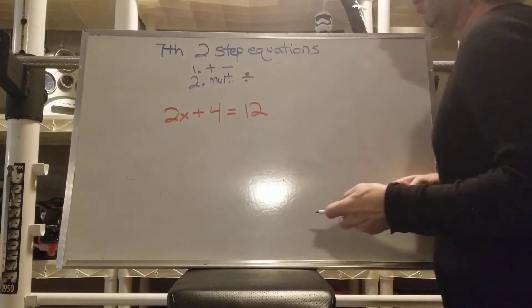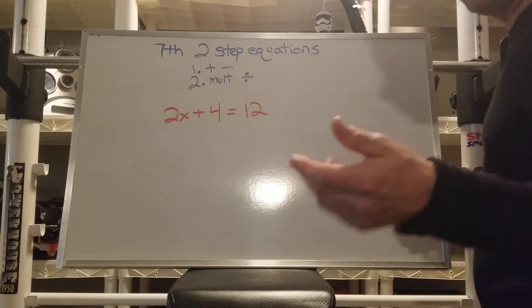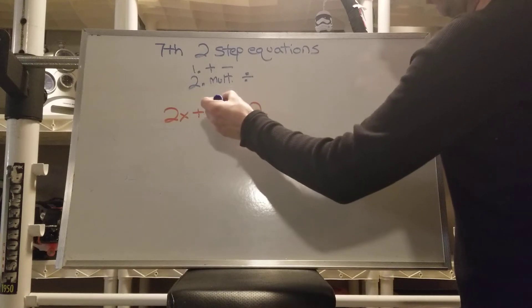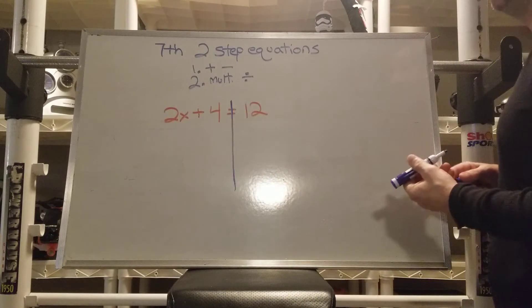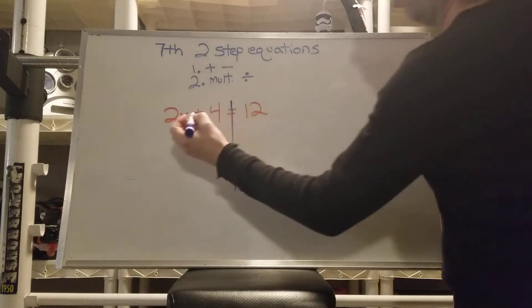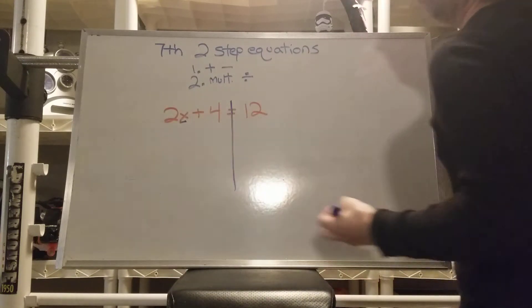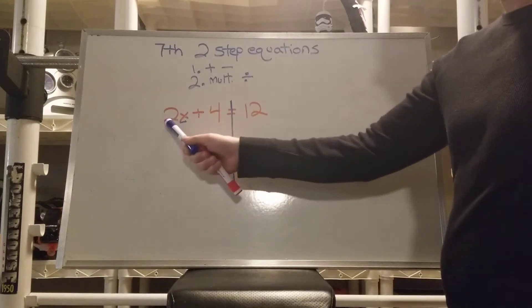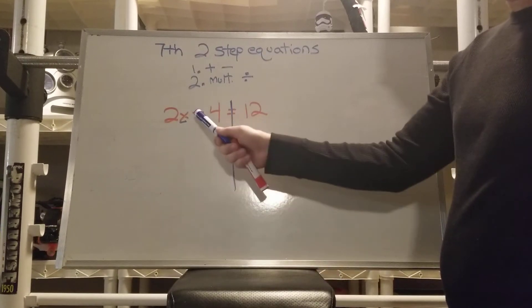Alright, 2x plus 4 equals 12. So we start these just like every other equation. We draw a line to the equal sign. And remember, our goal is to get this x all by itself. So we have to get rid of this times 2 and we have to get rid of this plus 4.